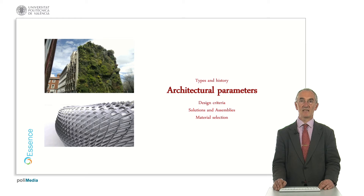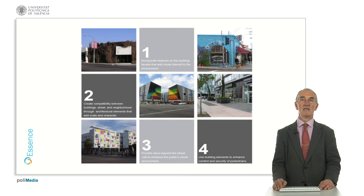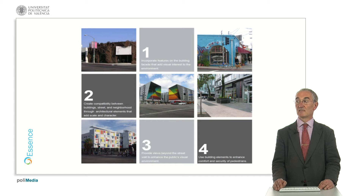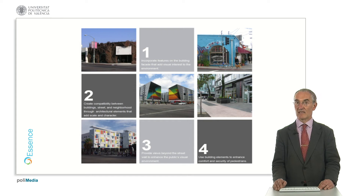Let's understand the architectural parameters we are going to analyze. The first one is how to incorporate features on the building that have visual interest — in other words, the aesthetic of the building. Second, create a compatibility between the buildings, the street, and the neighborhood — in other words, urbanism. So the first constraint is aesthetics, and the second is urbanism.